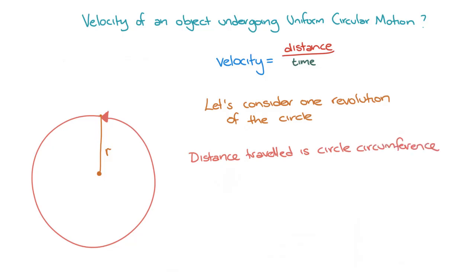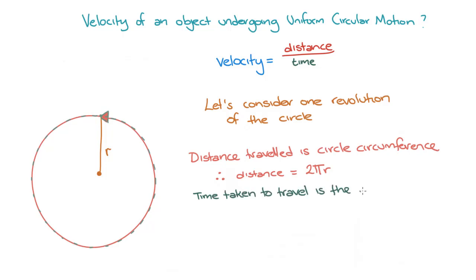The circumference of a circle is equal to 2π times the radius of the circle. So for an object undergoing one revolution of the circle, the distance is equal to 2πr. The time taken to complete one revolution around the circle is the period, which we are going to call big T.